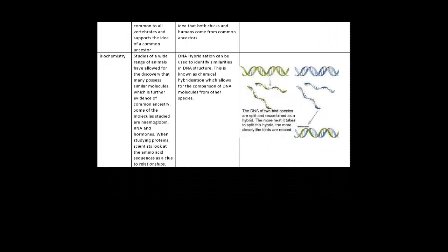Leaving my favourite to last, biochemistry. Biochemistry is actually studying a wide range of animals and having allowed for that discovery to possess many similar molecules, you can actually check using the hemoglobin, RNA and hormones if these organisms are similar in any sense or came from the same organism, like common ancestor. What I mean by this is that through studying these proteins, scientists look at the amino acid sequences as a clue to relationships.